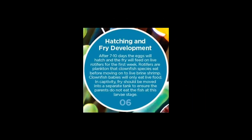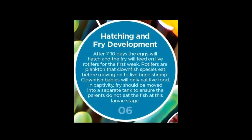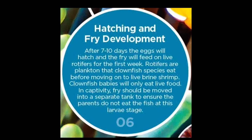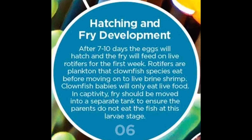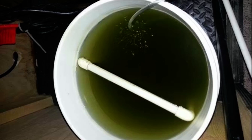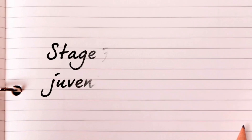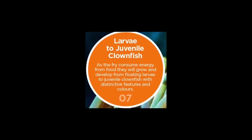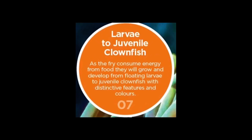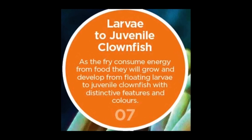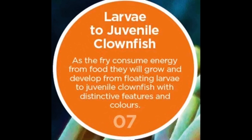In stage six, we're talking about hatching and fry development. After they hatch, the eggs are going to start to eat the rotifers, which are the live plankton that they like to eat. They are bright green in colour and not really much to look at, but these will help them grow big and fat and strong. Stage seven is where the larvae move towards being juvenile fish. These tiny fish start consuming lots of energy and food and go from being tiny little floating creatures to darting around like tiny little toddlers.